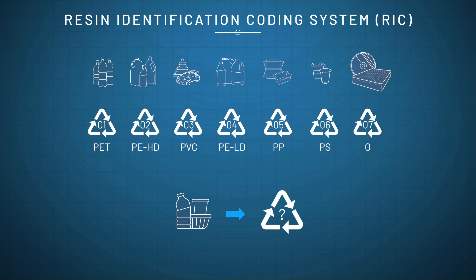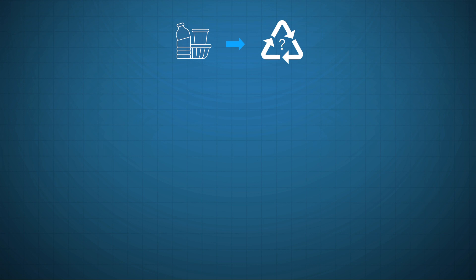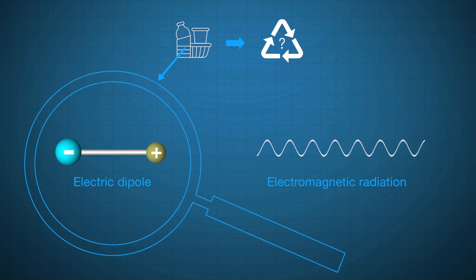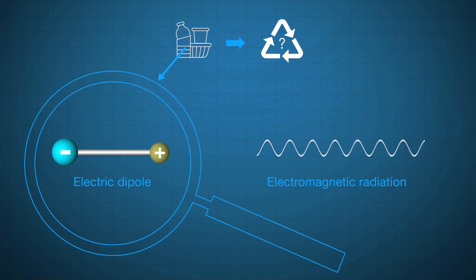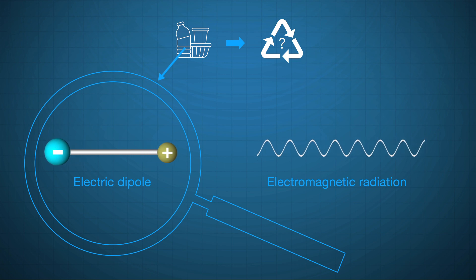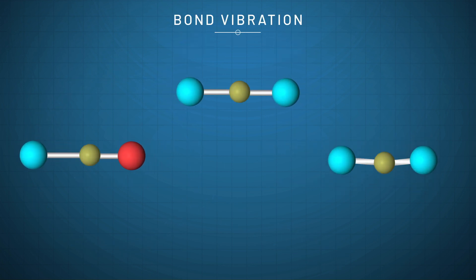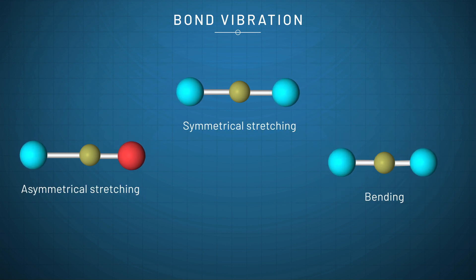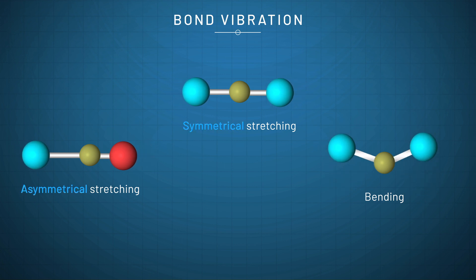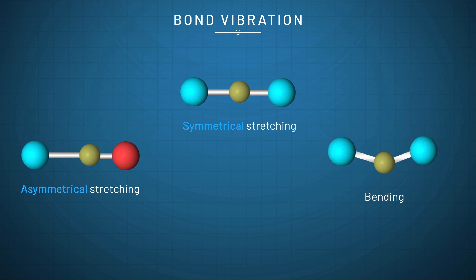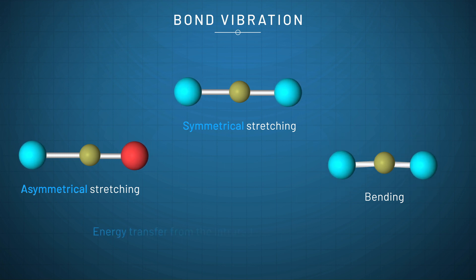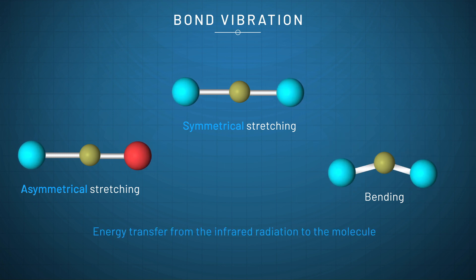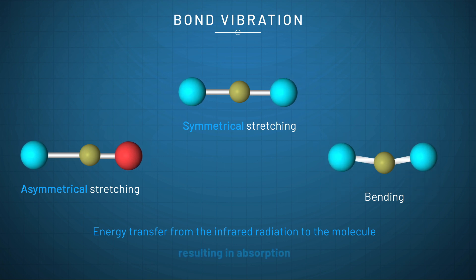The resin material used in a plastic can also be identified by infrared spectroscopy. This technique works by measuring the absorption of electromagnetic radiation by a molecule containing at least one electric dipole moment with a matching vibration frequency. The vibrations can consist of a change in bond length called stretching, or bond angle called bending.